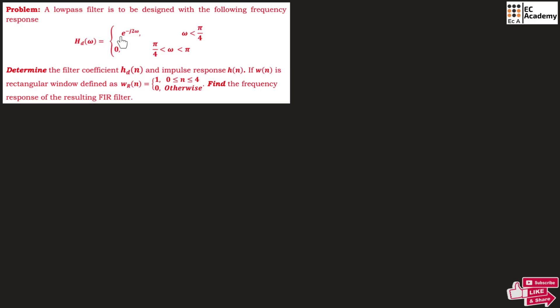In the given problem, a low pass filter has to be designed with the following frequency response: hd of omega equals e to the power of minus j 2 omega for omega less than pi by 4, and hd of omega equals 0 for omega ranging between pi by 4 and pi. We need to determine the coefficient hd of n and the impulse response h of n. The window function is a rectangular window defined as omega r of n equals 1 for n ranging between 0 to 4, and omega r of n equals 0 for other values of n. Finally, we need to find the frequency response of the resulting FIR filter.